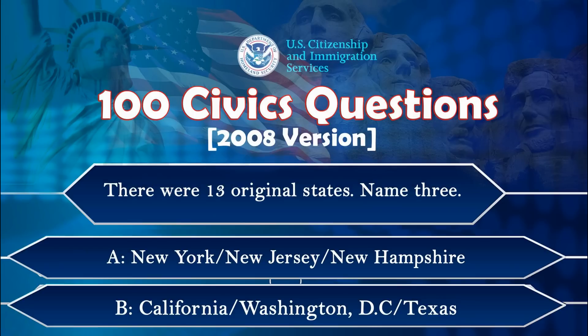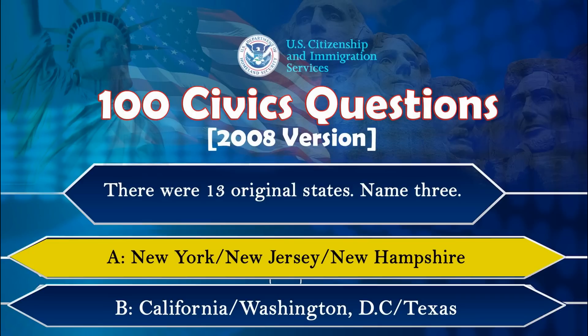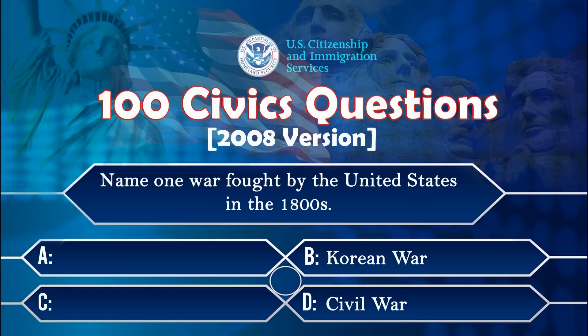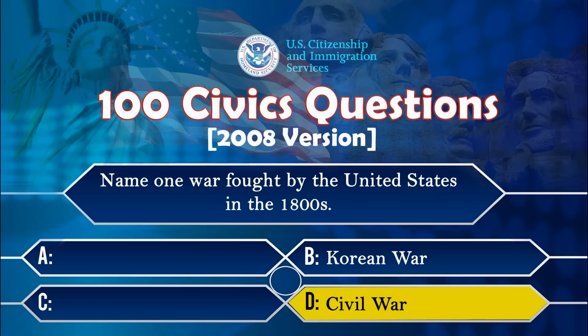There were 13 original states. Name three. New Hampshire, New York, New Jersey. Name one war fought by the United States in the 1800s. Civil War.